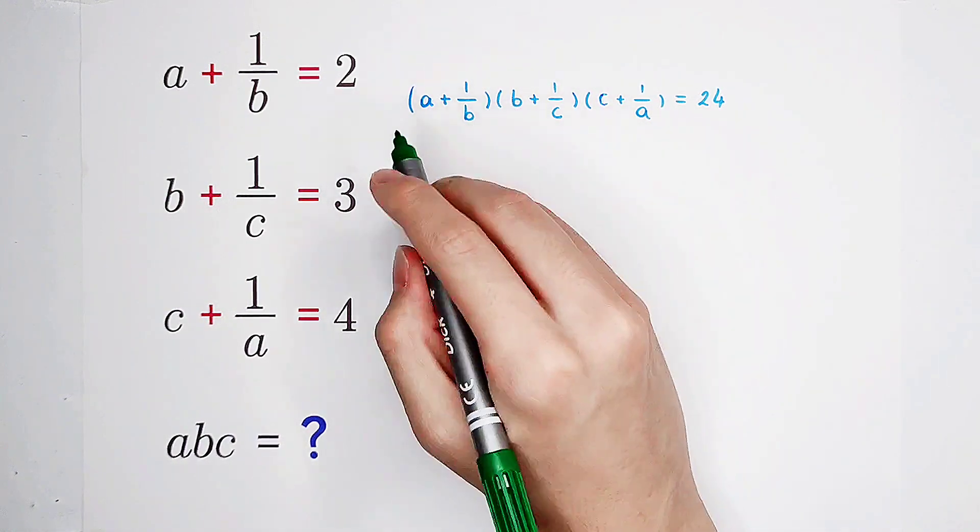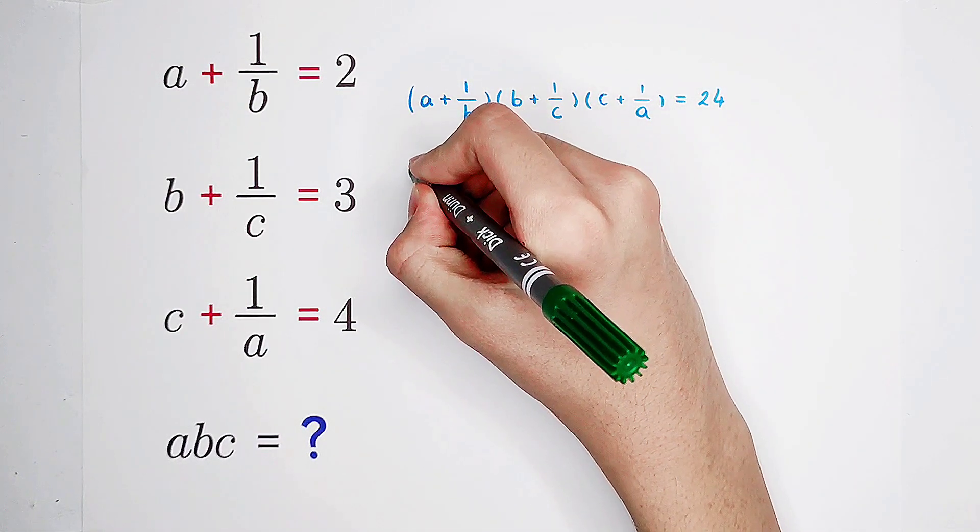Now we can expand the whole left-hand side. We're gonna get a times b times c first.